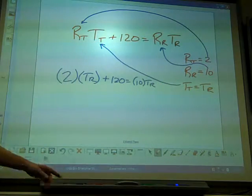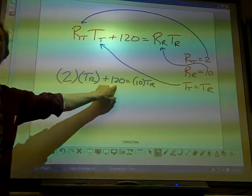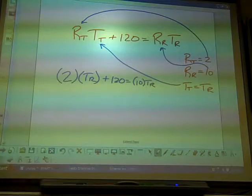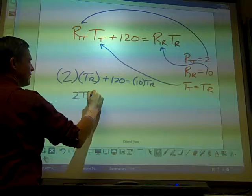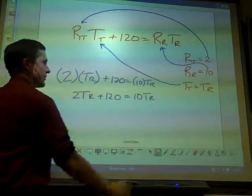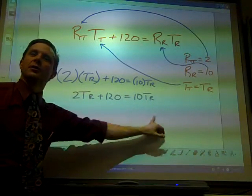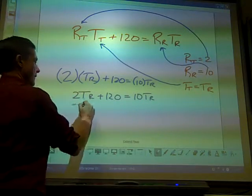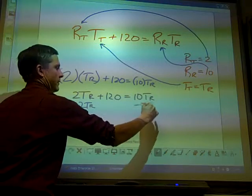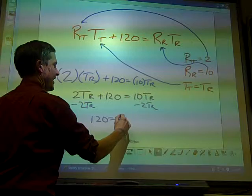And you notice the goal here is to get down to one equation and one unknown. Now everything is in terms of T_R. Now a little bit of multiplication. I have this. I see that this T_R is here and this is here. If I bring this one across, 120 will be by itself.